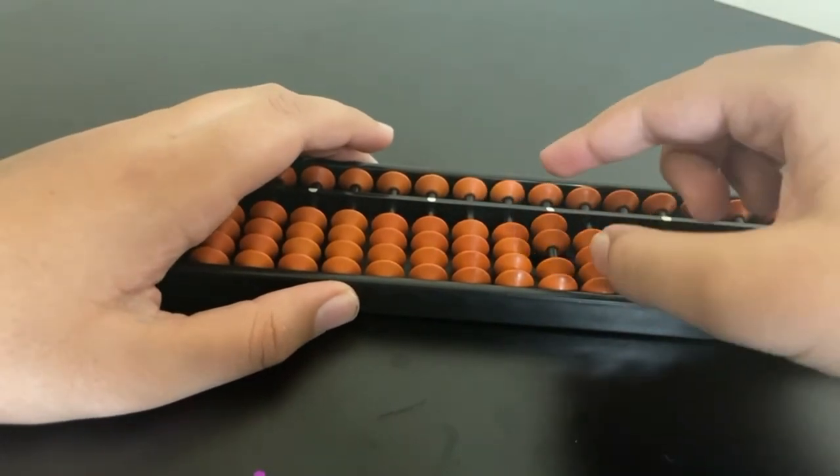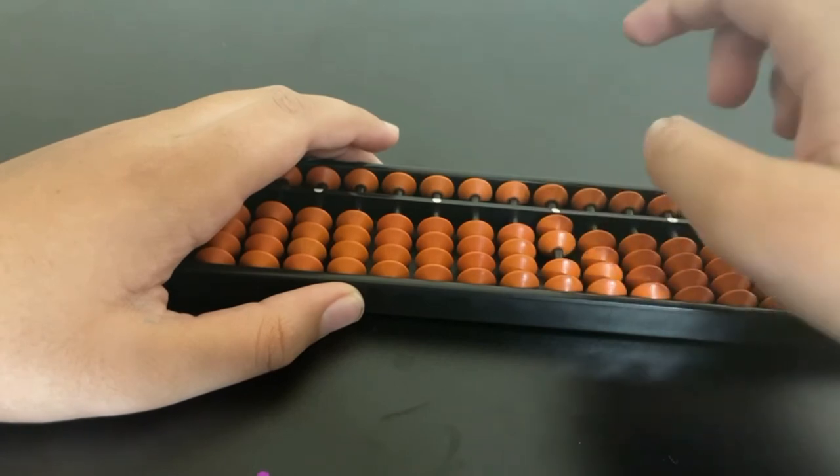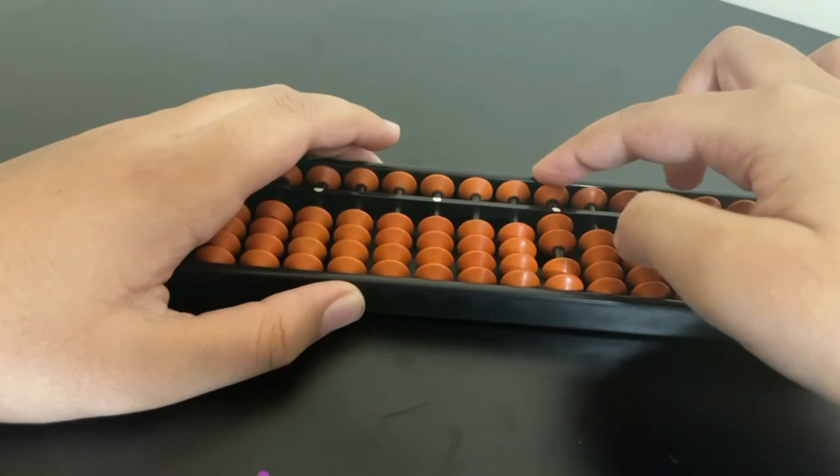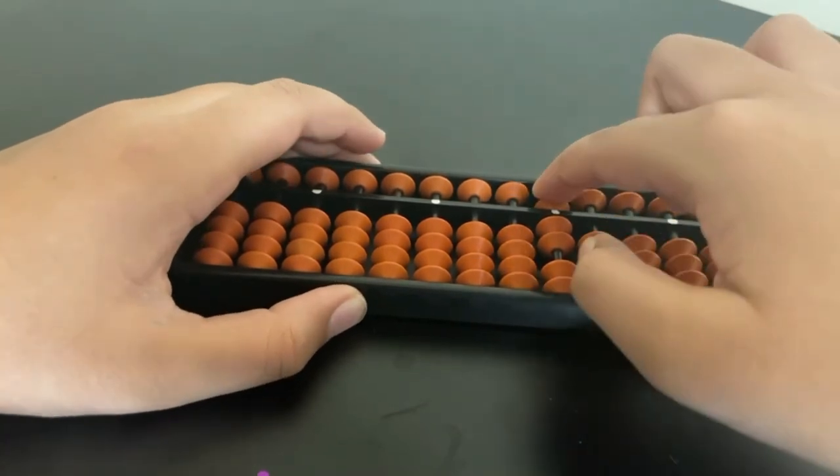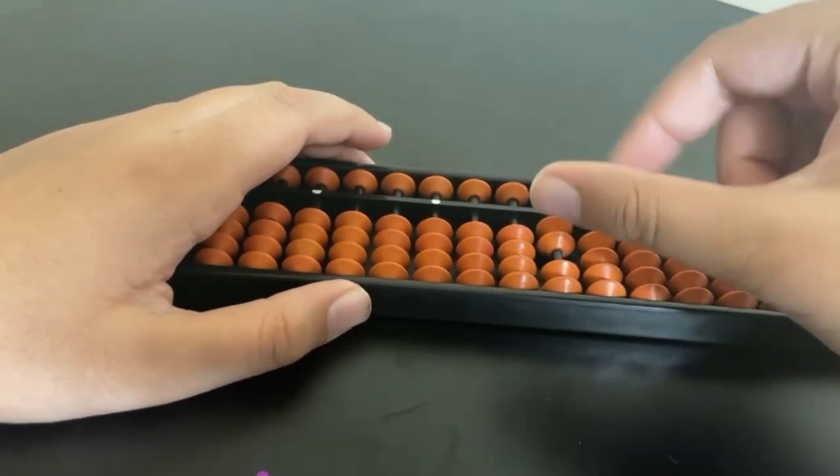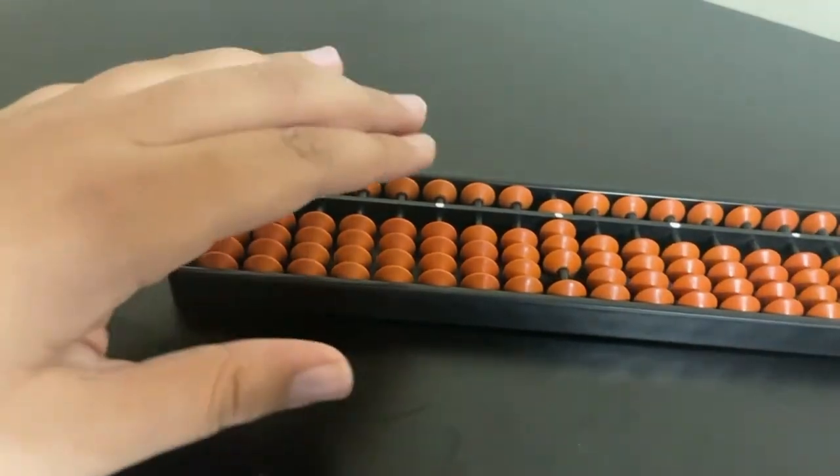And let's do one more. We'll do plus six. So to do plus six, what you're going to have to do is take the top bead, and since it's the value of five we're going to put it, and then six minus five is one. Then you're going to need one of the one-valued beads just like that, and now our answer is eight.